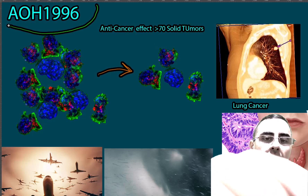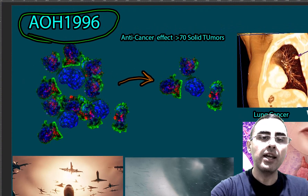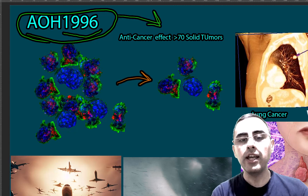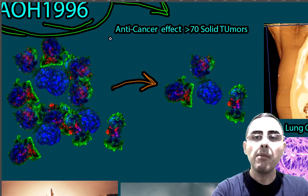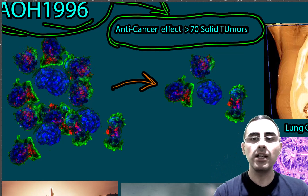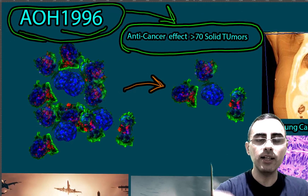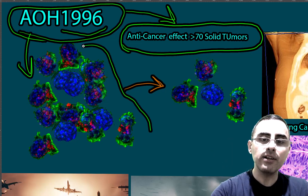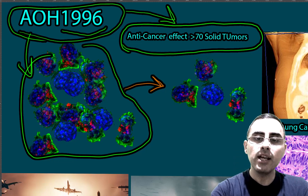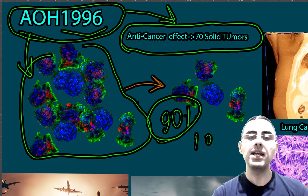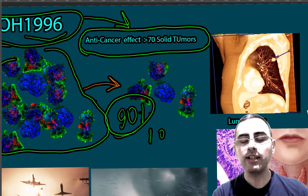We have huge news in medicine, more specifically in cancer treatment. AOH-1996 is a small molecule which has anti-cancer effects. It's important because it's effective against more than 70 solid tumors — a huge number. AOH-1996 exhibits anti-cancer action and can regress and shrink tumors in up to 90% of cases. The main limitation is that we have no clinical studies in humans yet.